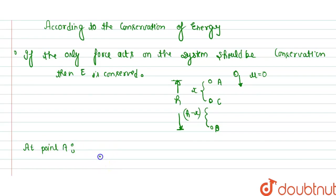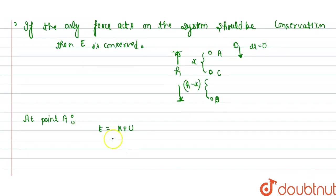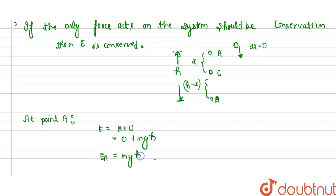At position A, the initial velocity is zero. So E equals K_A plus U. Since kinetic energy is zero, energy at A equals mgh. So E_A equals mgh.